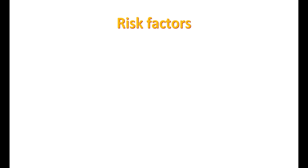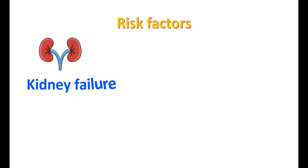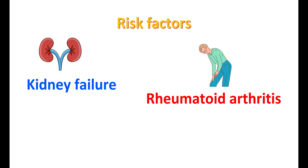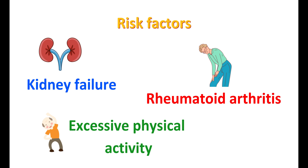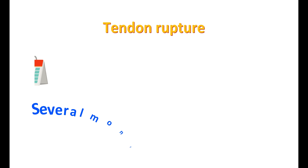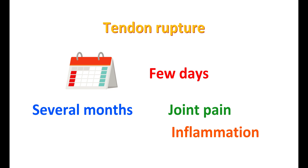Other risk factors that can increase tendon rupture include kidney failure, where this side effect may be more pronounced. Similarly, in people with rheumatoid arthritis — an auto-inflammatory disorder affecting the bones and joints — tendon rupture may be more pronounced. Excessive physical activity while using ciprofloxacin may also increase the risk. All these things should be considered before using ciprofloxacin for longer periods. This tendon rupture may be observed after several months of use; however, in people with risk factors it may develop within a few days. If you observe any joint pain and inflammation at the joints, use of ciprofloxacin may be limited or avoided.